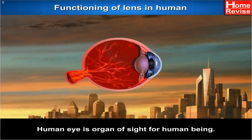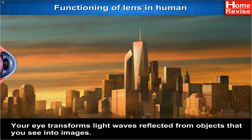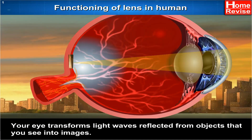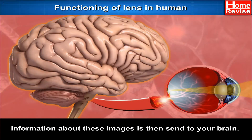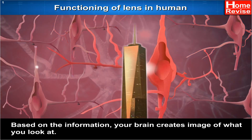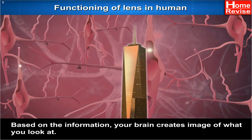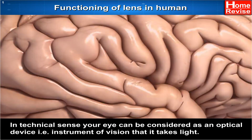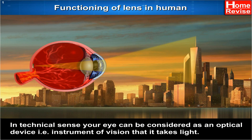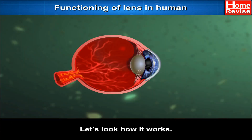The human eye is an organ of sight for human beings. Your eye transforms light waves reflected from objects that you see into images. Information about these images is then sent to your brain. Based on the information, your brain creates images of what you look at. In a technical sense, your eye can be considered as an optical device — an instrument of vision — that takes in light. Let's look at how it works.